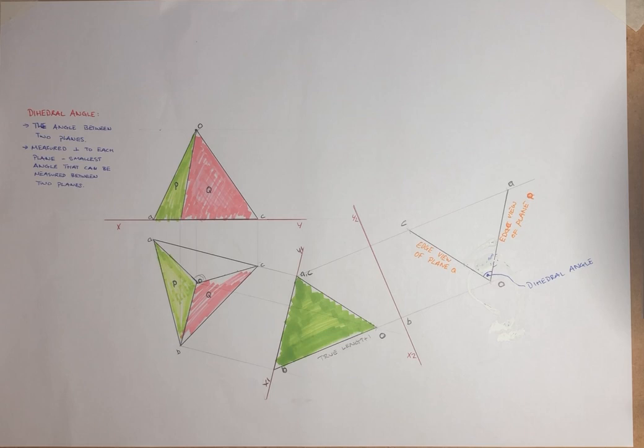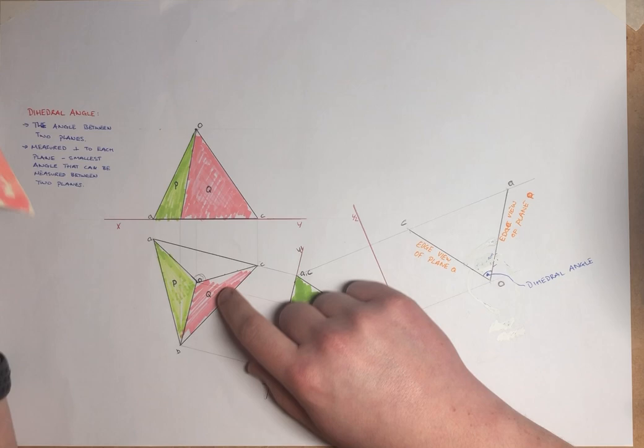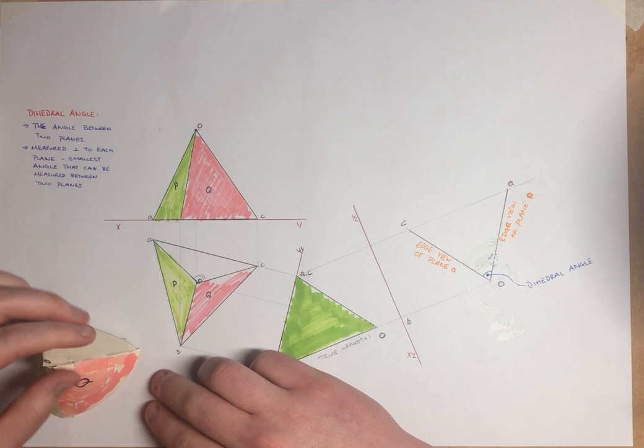So just looking at this example here. We have our surfaces just seen in this model as well. This is our plan, so just looking down here. What we want to get is our dihedral angle.